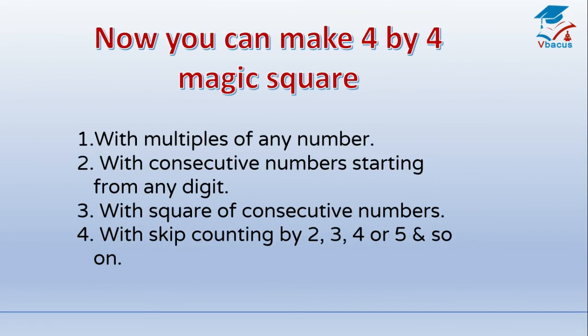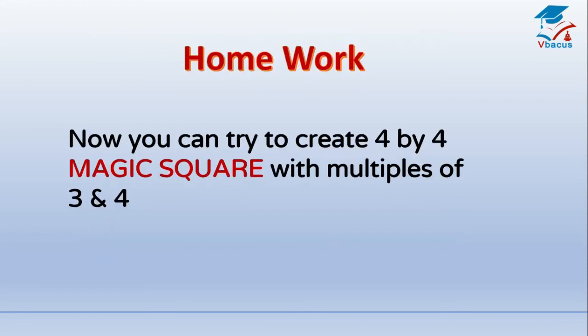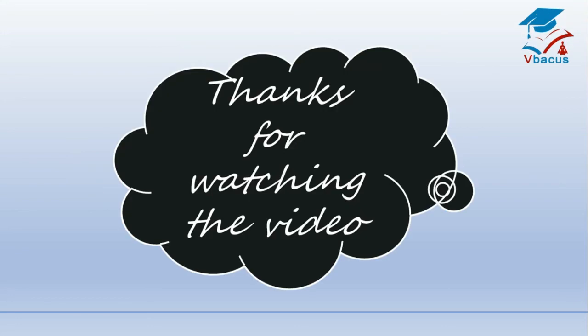Now there is homework for you. You can make a 4 by 4 magic square with multiples of any number, with consecutive numbers starting from any digit, with squares of consecutive numbers, with skip counting by 2, 3, 4, or 5, and so on. Try to create a 4 by 4 magic square with multiples of 3 and 4, and write the answer in the comment box. Thanks for watching. Please like, share, and subscribe. Thank you.